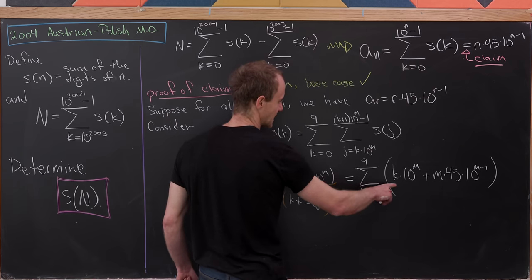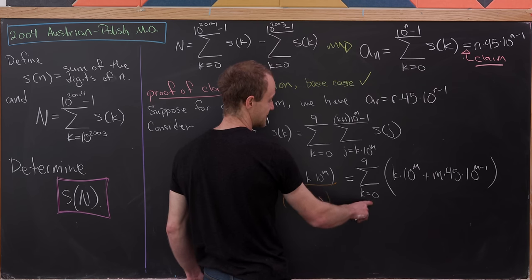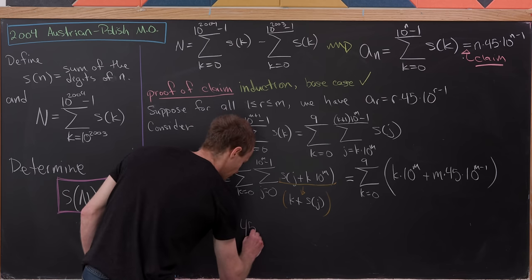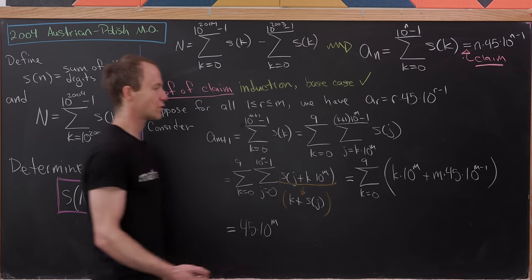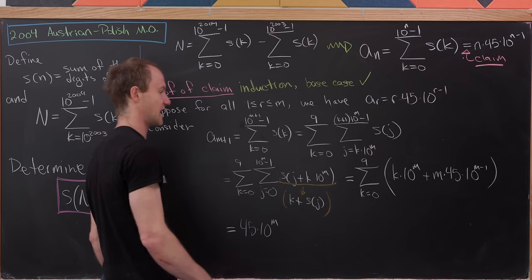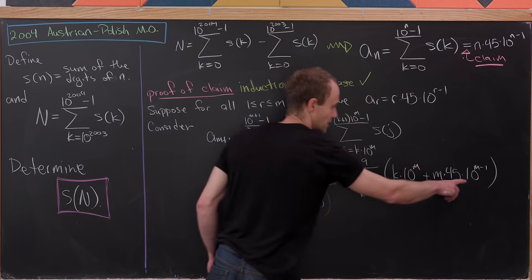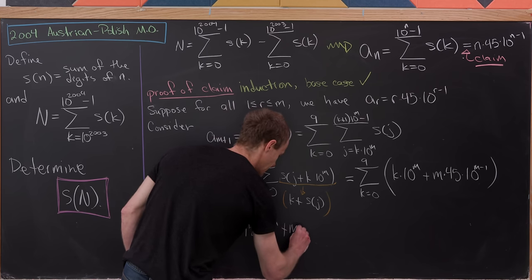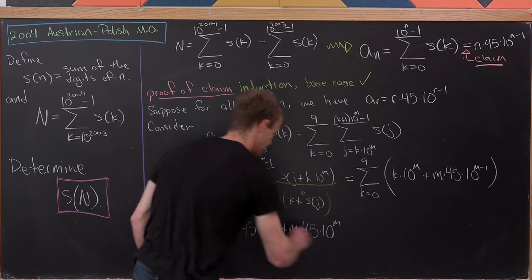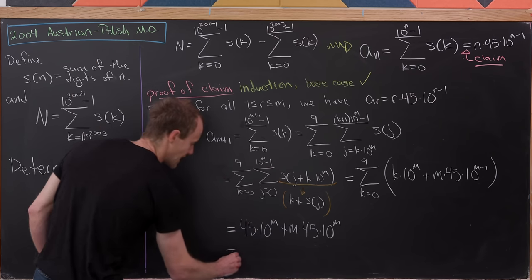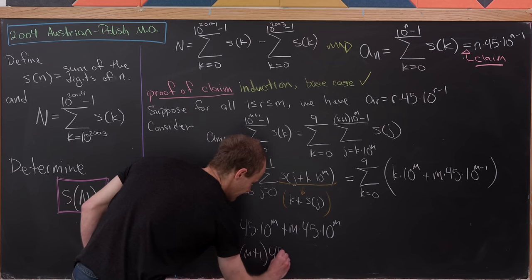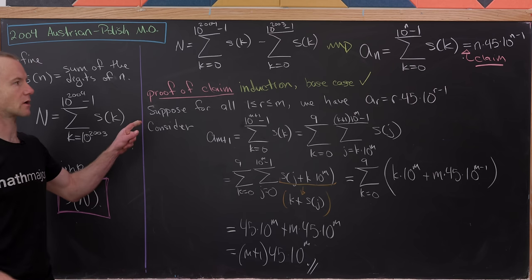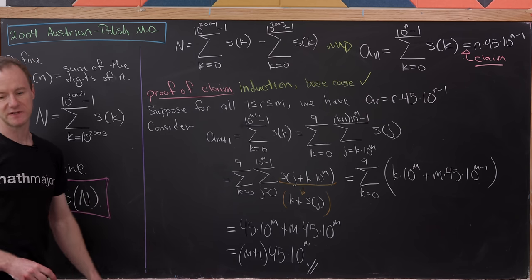The outer sum over k = 0 to 9 of k × 10^m gives 45 × 10^m (since 0+1+...+9 = 45). The outer sum of m × 45 × 10^(m−1) repeated 10 times gives m × 45 × 10^m. Adding these together: (m + 1) × 45 × 10^m, which is exactly the required form for A_(m+1). The induction is complete.